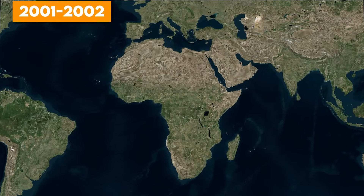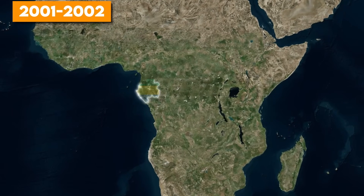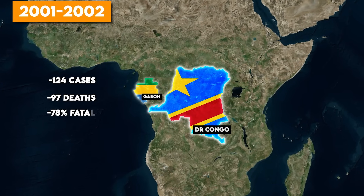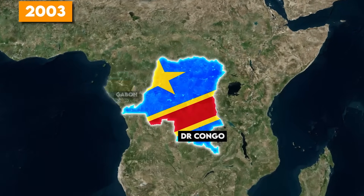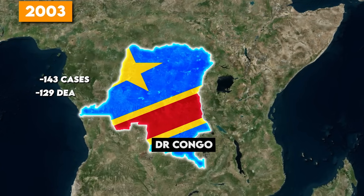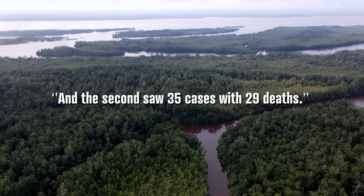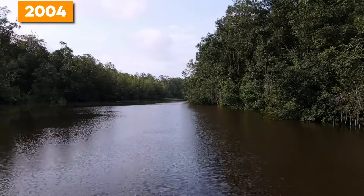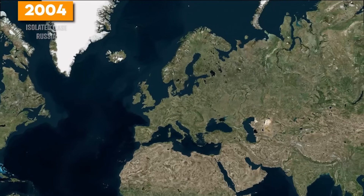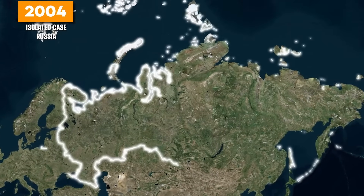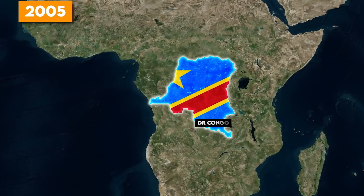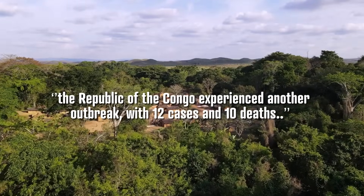Between 2001 and 2002, an outbreak affected both Gabon and the Democratic Republic of the Congo, resulting in 124 cases and 97 deaths — a 78% fatality rate. 2003 was particularly challenging for the DRC, which experienced two outbreaks: the first with 143 cases and 129 deaths, and the second with 35 cases and 29 deaths. In 2004, South Sudan reported another outbreak with 17 cases and 7 deaths, alongside another laboratory-acquired infection in Russia resulting in one fatality. In 2005, the DRC experienced another outbreak with 12 cases and 10 deaths.